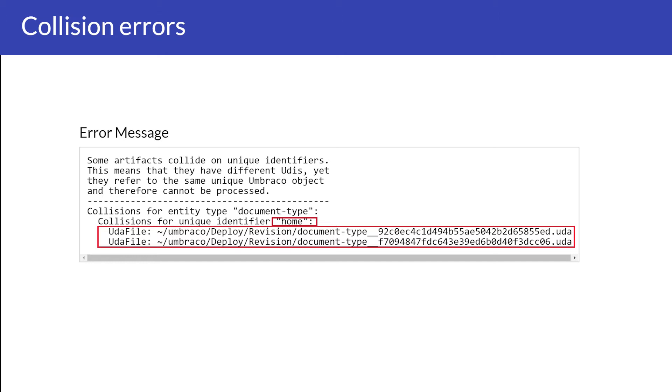At the moment when we deploy, it tries to create the site structure for these files and it will inspect each file from the revision folder. It will then try to create the data entity with the alias specified. However, there are two UDA files sharing exactly the same alias, which is home. This leads to a conflict because it is impossible for the deployer to know which one is the correct file, and instead it will send us an error in return.